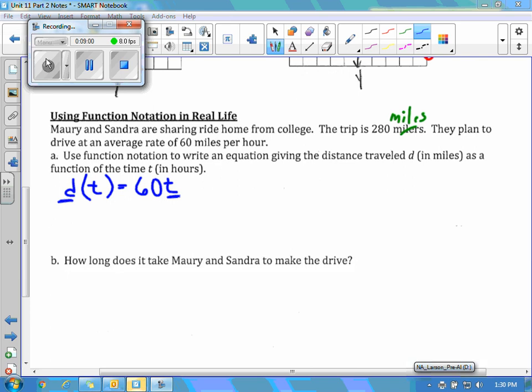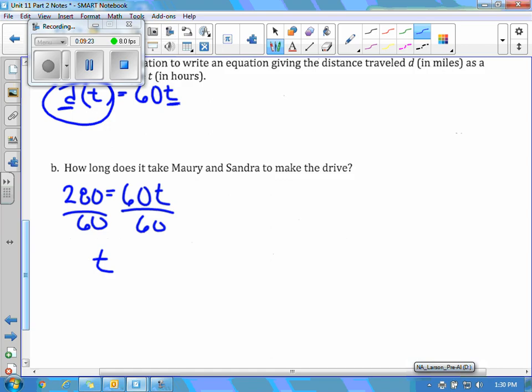Then for part B it says how long does it take Maury and Sandra to make the drive. We know that the trip is 280 miles. So that 280 is the distance. So that's going to replace the d of t. So I have 280 equaling 60 times how long it takes them. So I can go ahead and divide both sides by 60. And I would get t equals 280 divided by 60. It does not work out clean. But if you work that out, you get 4 and 2 thirds hours. Make sure you have the unit on there because 4 and 2 thirds doesn't mean anything.